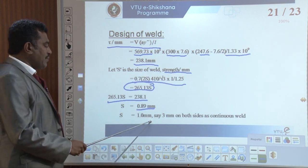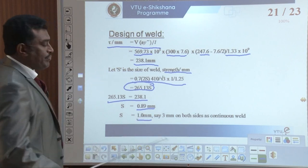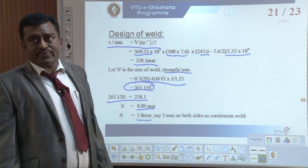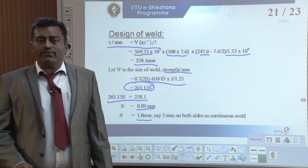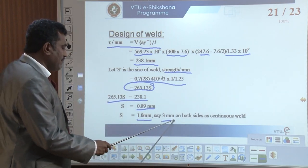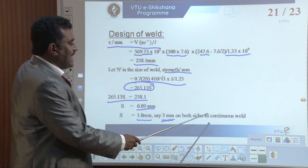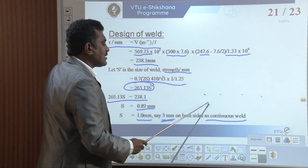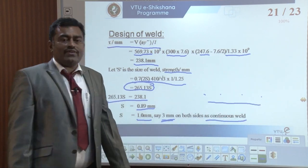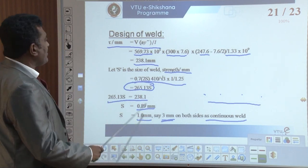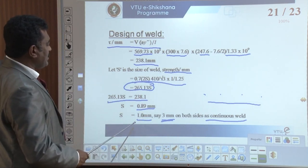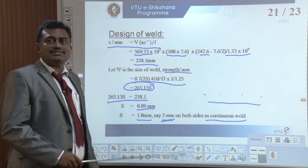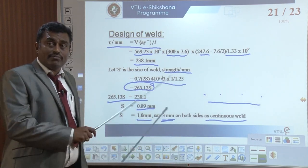S is approximately 1 mm — that is the size of the weld will be 1 mm. In my case, the welding required is very small. But we cannot weld 1 mm; therefore we say 3 mm weld — minimum 3 mm weld — on both sides as a continuous weld, not intermediate welding. We can weld it throughout the length of the top flange.